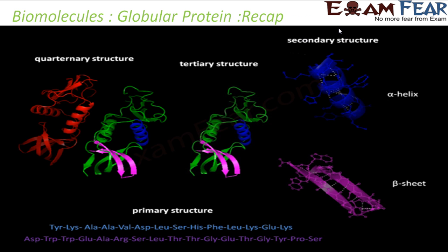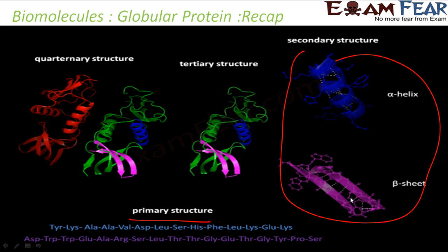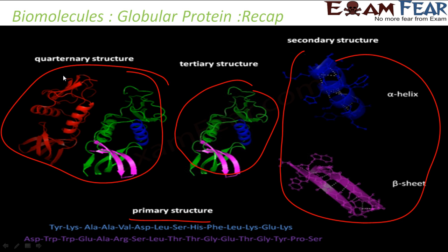Let's do a recap on protein structure. Primary structure is the sequence of amino acids. From the sequence comes secondary structure — either alpha helix or beta-pleated. Once I have secondary structure, I fold further to get tertiary structure, which involves sulfide bonds and Van der Waals force interactions. Many tertiary structures together form the quaternary structure.